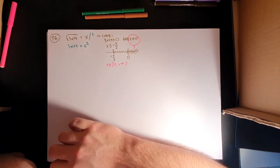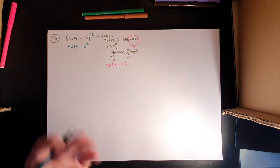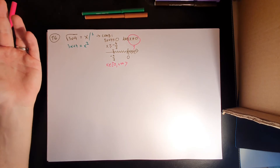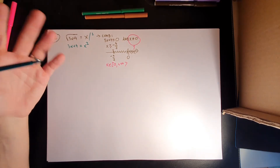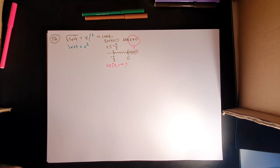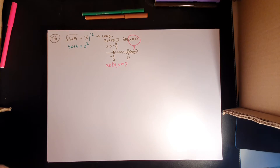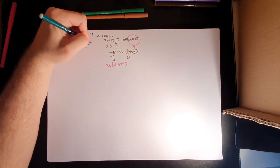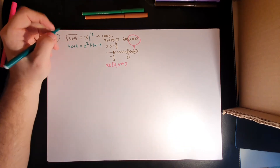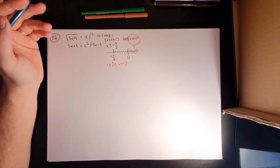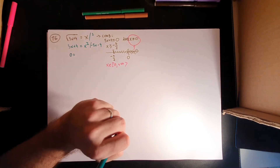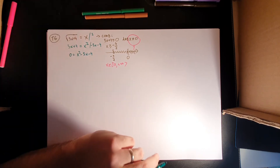We didn't get a linear equation — we got x squared, meaning this leads us into quadratic equations. We haven't formally learned to solve these yet, but we know certain methods. First, we need everything on one side. Subtracting 3x and 4 from both sides gives us 0 equals x squared minus 3x minus 4.